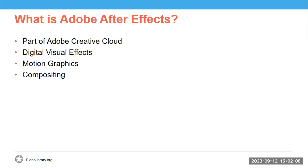After Effects is frequently used in the post-production process of filmmaking and television production. It is an incredible software, but it isn't really ideal for editing footage by itself or creating illustrations. Instead, After Effects is usually used after the footage has been edited or after the illustrations and logos have been created. Motion graphics refer to basic animations that are used to make logos, text, and illustrations stand out.